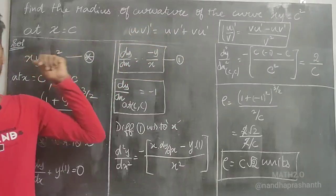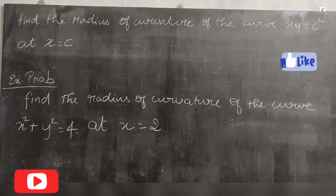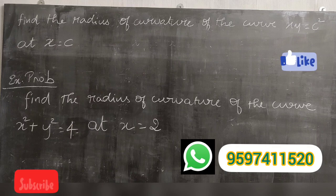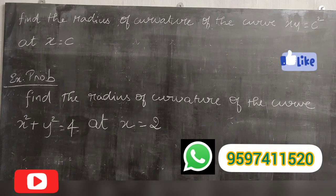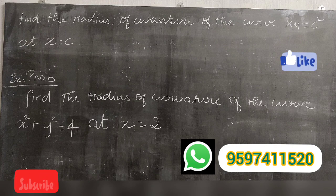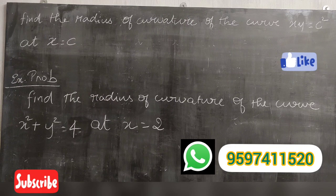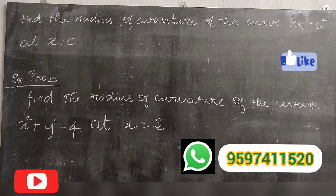Exercise problem: Find the radius of curvature of the curve x² + y² = 4 at x = 2. Try to solve it, and if you have any doubts send a WhatsApp message. See you in the next video — bye bye, thank you.